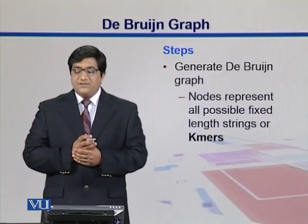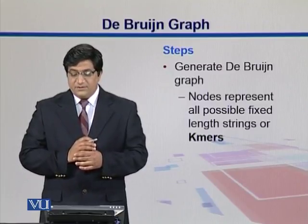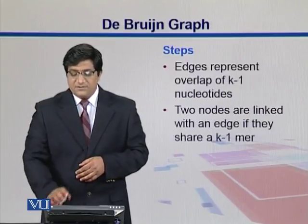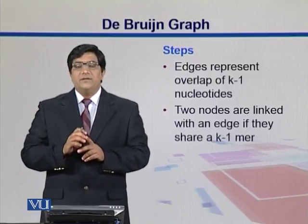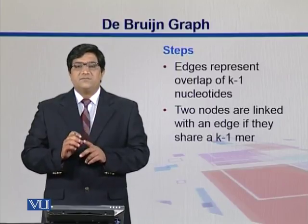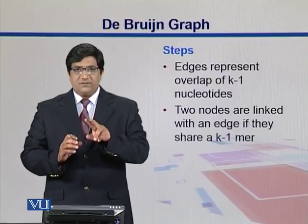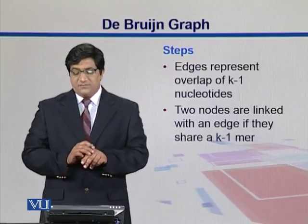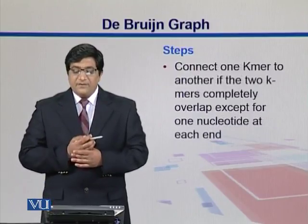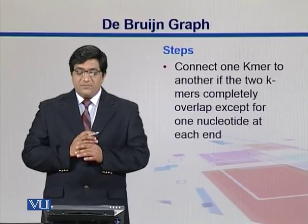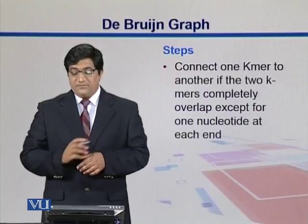What we do next is generate the de Bruijn graphs, where our nodes are these K-mers — fixed-length strings — and edges represent overlaps of K-1 nucleotides. So one K-mer should match another with K-1 length. For example, if the K-mer size is 3, at most two of them should be overlapping with one another, not the third one. Two nodes are linked with an edge if they share a K-1 mer. We connect one K-mer to another if the two K-mers completely overlap except for one nucleotide at each end; if they completely overlap, we merge them together.